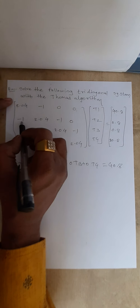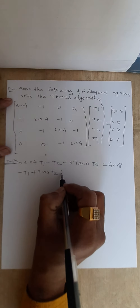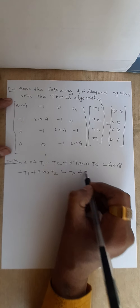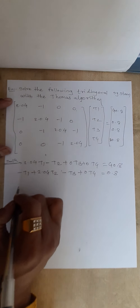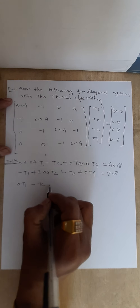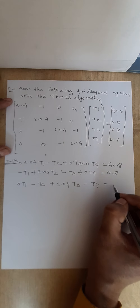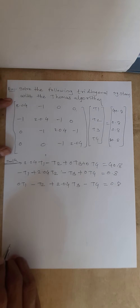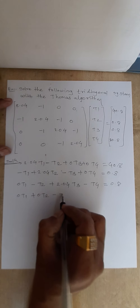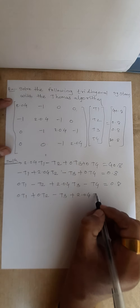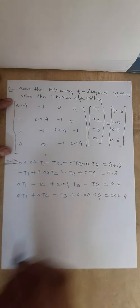The second equation is: minus T1 plus 2.04 T2 minus T3 plus 0·T4 equals 0.8. The third equation is: 0·T1 minus T2 plus 2.04 T3 minus T4 equals 200.8.